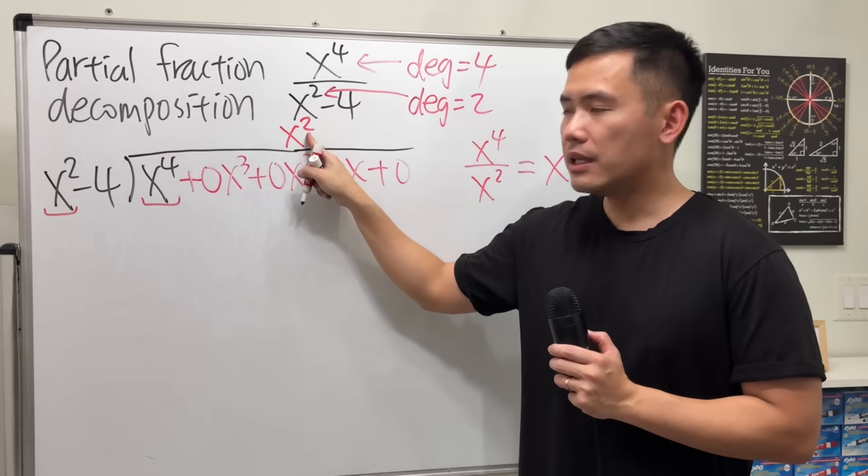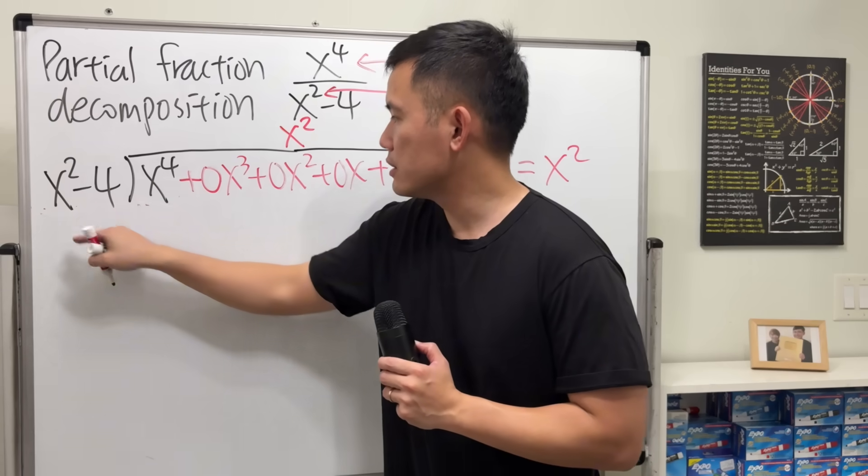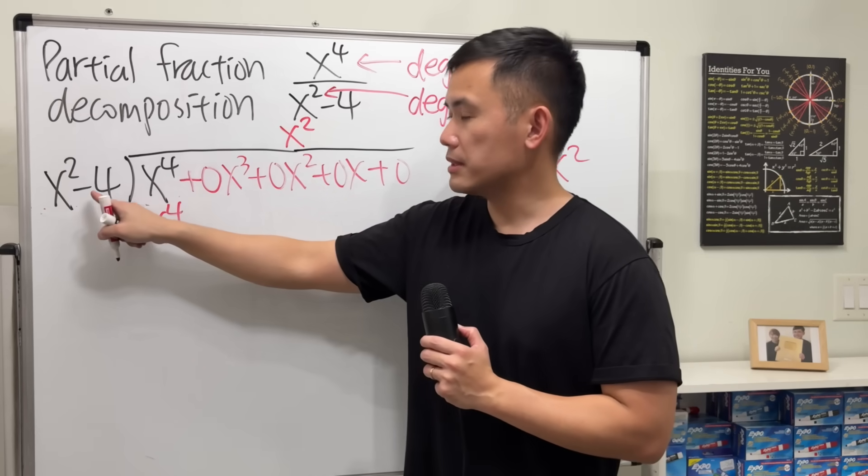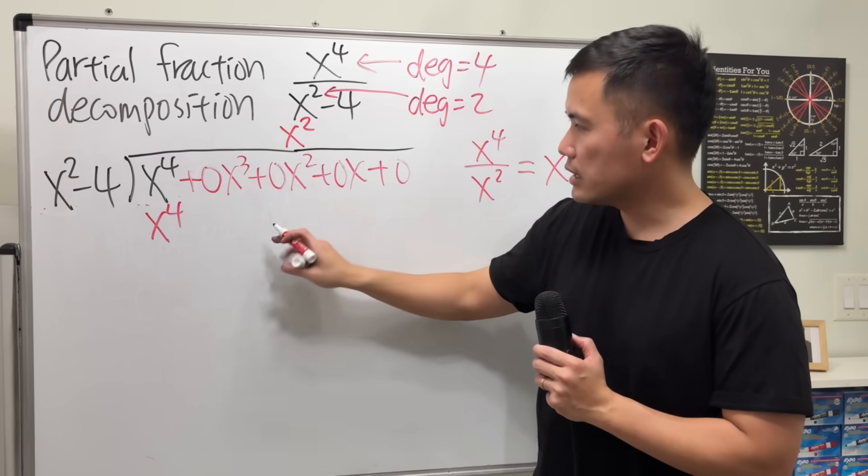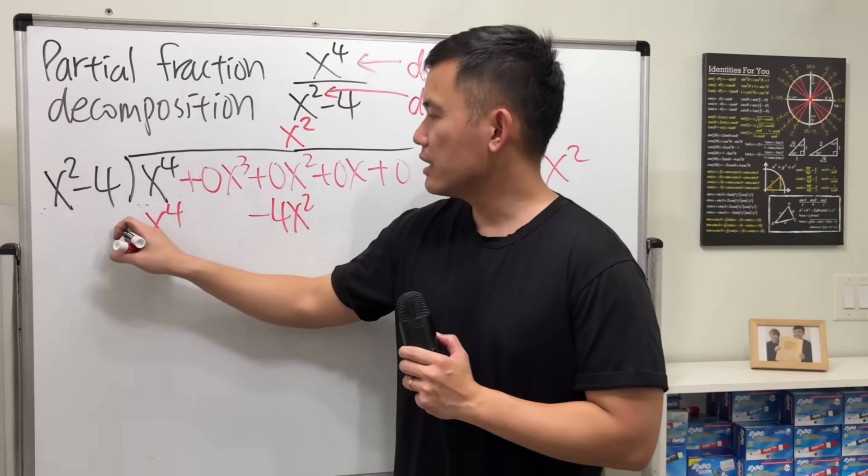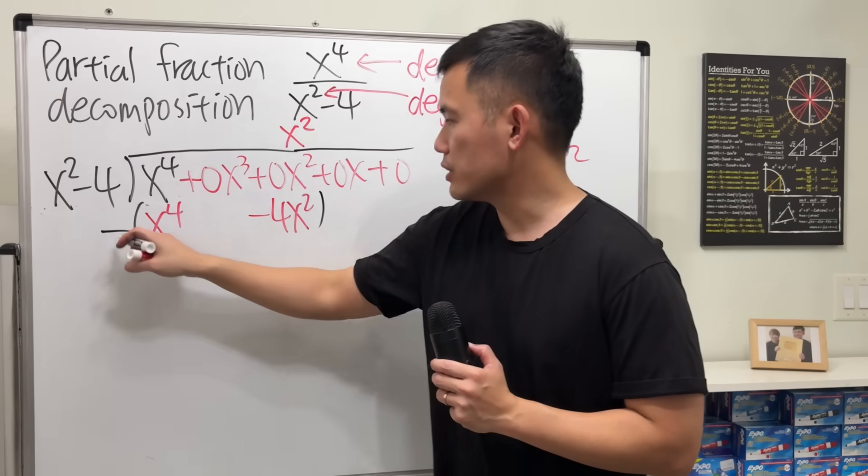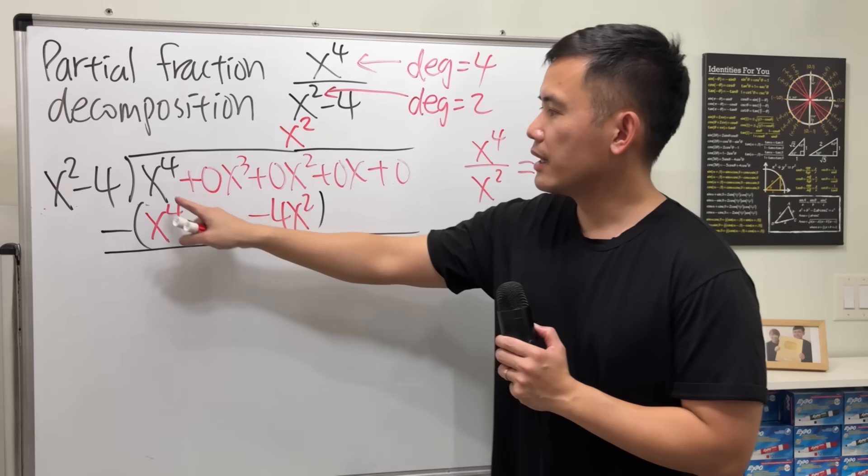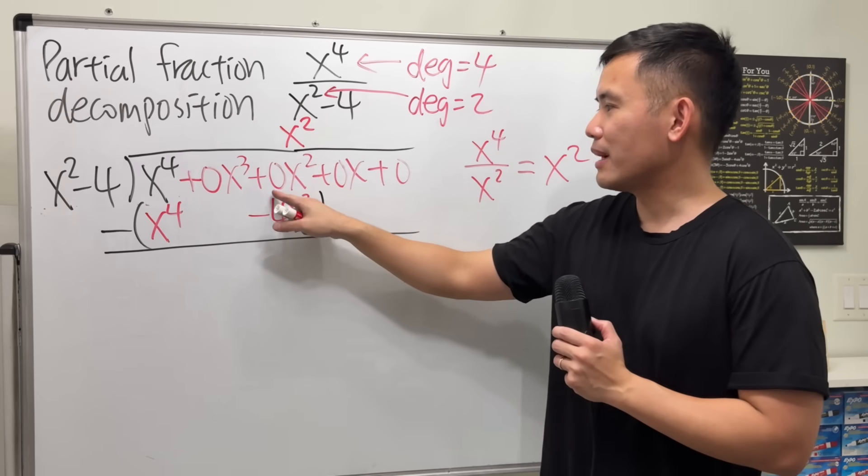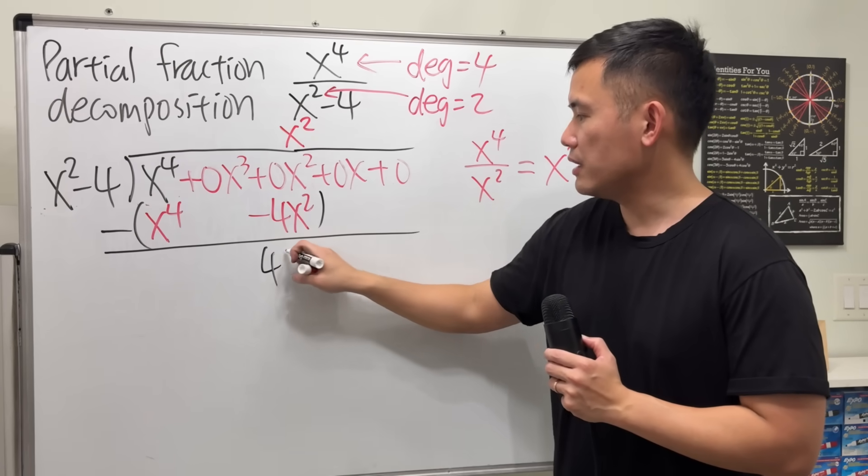Then, we take this times that. x squared times x squared. Here, we get x to the fourth power. And then, don't forget to take this times that. x squared times negative 4 is negative 4x squared. Line them up here. It's important to line them up. Okay, we're done with that. Now, for polynomial long division, we subtract. Put parentheses like this, with a negative on the outside, and then we subtract. This minus that is zero. This minus nothing, just nothing. But zero minus negative 4 is positive 4. And then, maintain the x squared term.